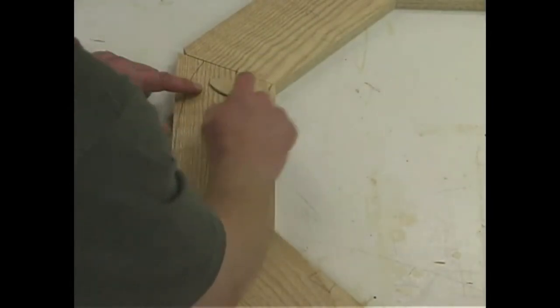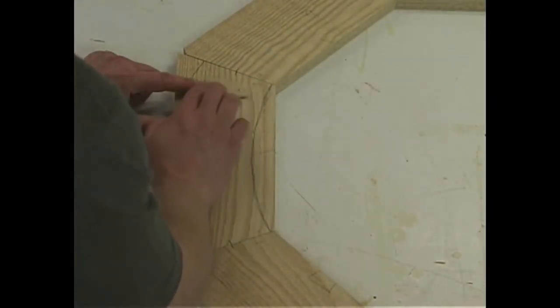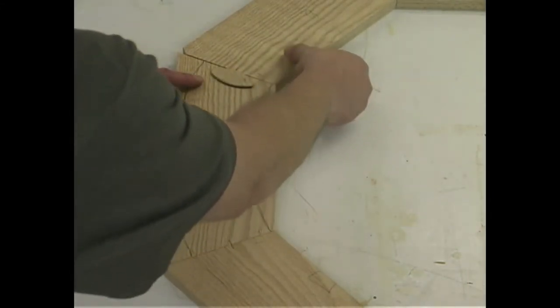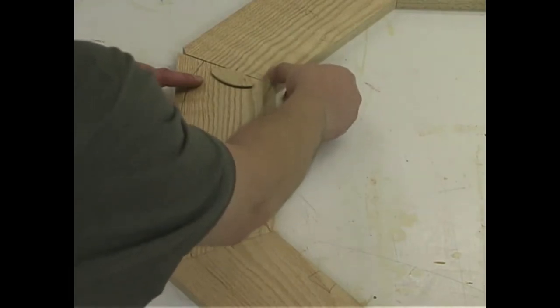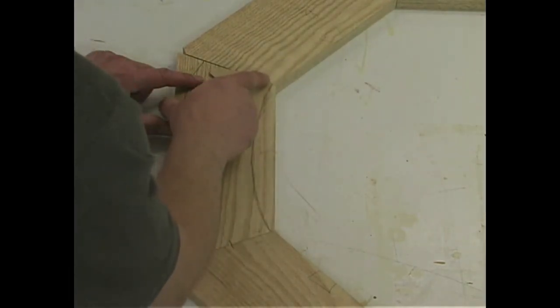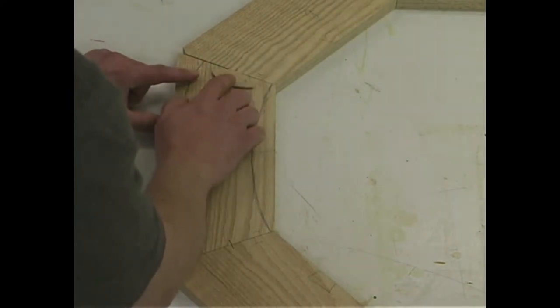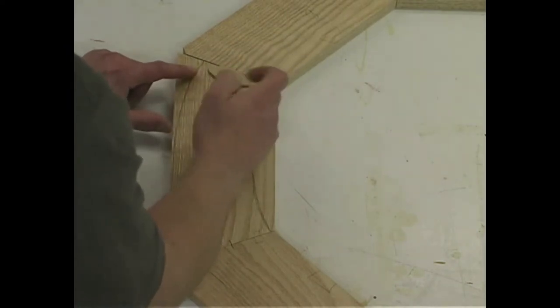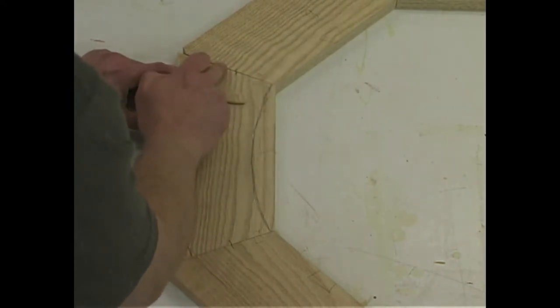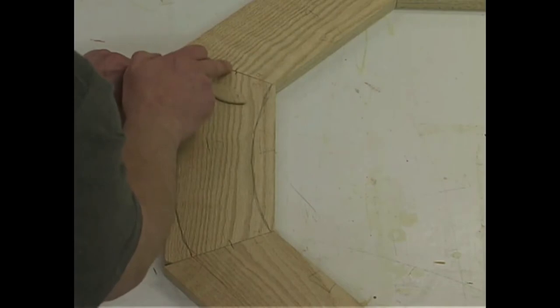To reinforce this butt joint, I'm going to be using number twenty biscuits. I want to be very careful as to where I cut the slot and position the biscuits. On this inside edge, we're going to be machining a rabbet roughly about a half inch wide. We don't want the biscuit to show on the outside of the radius, so we have to be very careful. I'm positioning mine about two and a quarter inches up from this inside point.